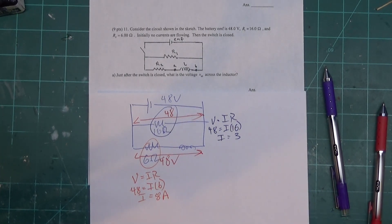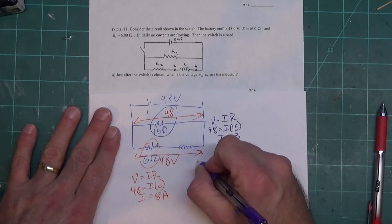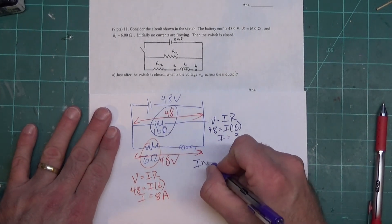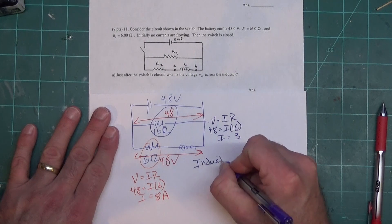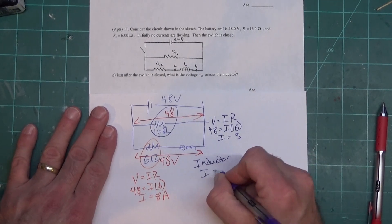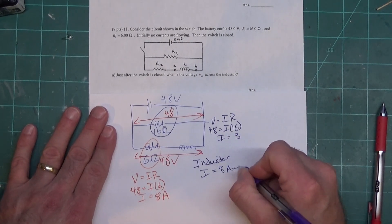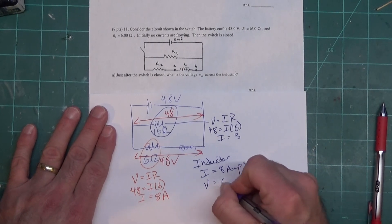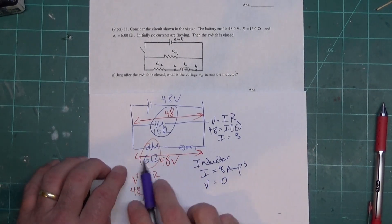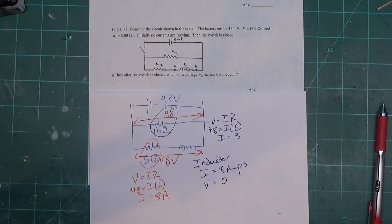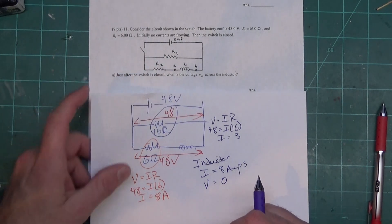Okay, now the inductor, it's not going to have any voltage on it. It will have a current of 8 amps. I will equal 8 amps but the voltage is zero. The reason the voltage is zero is all the voltage is being consumed by the resistor. The inductor isn't doing anything since it's fully charged, it's just sitting there.